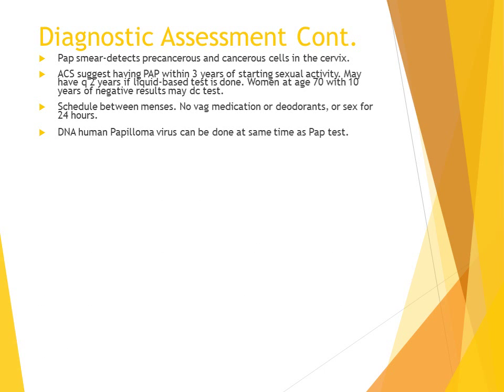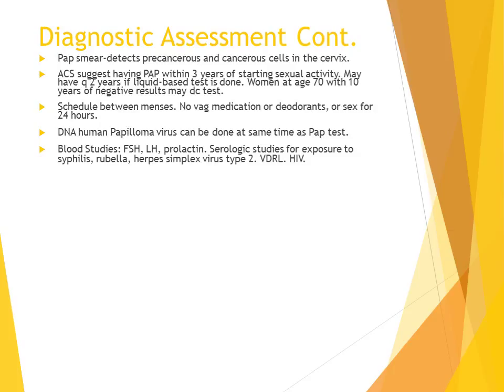Testing DNA of HPV can be done at the same time as a Pap test. Blood studies could include FSH, LH, and prolactin. Serological studies can be done for exposure to syphilis, rubella, herpes simplex virus type 2, VDRL, and HIV.